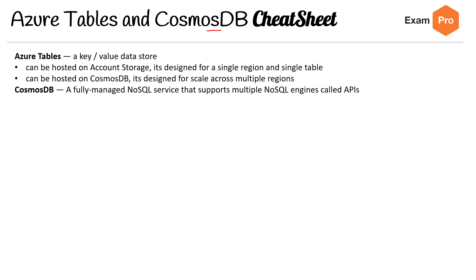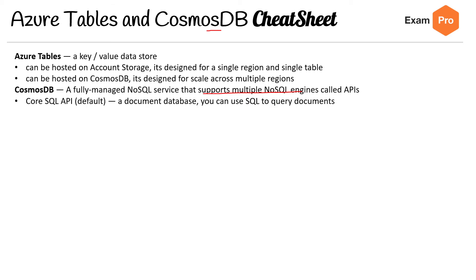Cosmos DB is a fully managed NoSQL service that supports multiple NoSQL engines called APIs — why they didn't call them engines, I don't know. Core SQL API is the default one; it's a document database and you can use SQL to query documents. And when people are talking about Cosmos DB, that's what they're talking about: the document database, the default one.